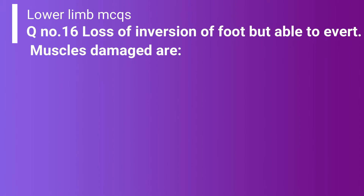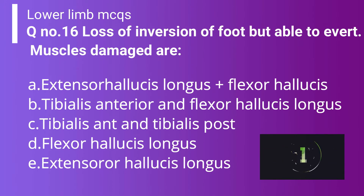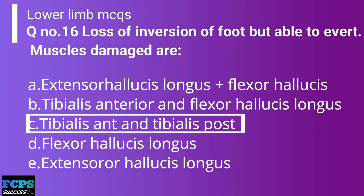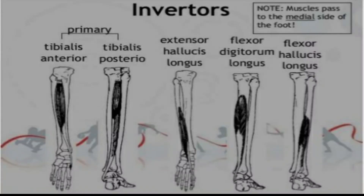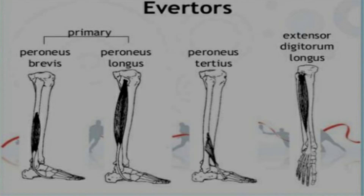Question 16: Loss of inversion of the foot but able to evert. The correct answer is Option C — tibialis anterior and tibialis posterior — as they are the primary inverters of the foot. Option E is slightly correct as a secondary inverter, but when both muscle groups appear as options, you must choose the best answer. In the CPSP exam, they ask for the best answer, so you must choose Option C: tibialis anterior and tibialis posterior.